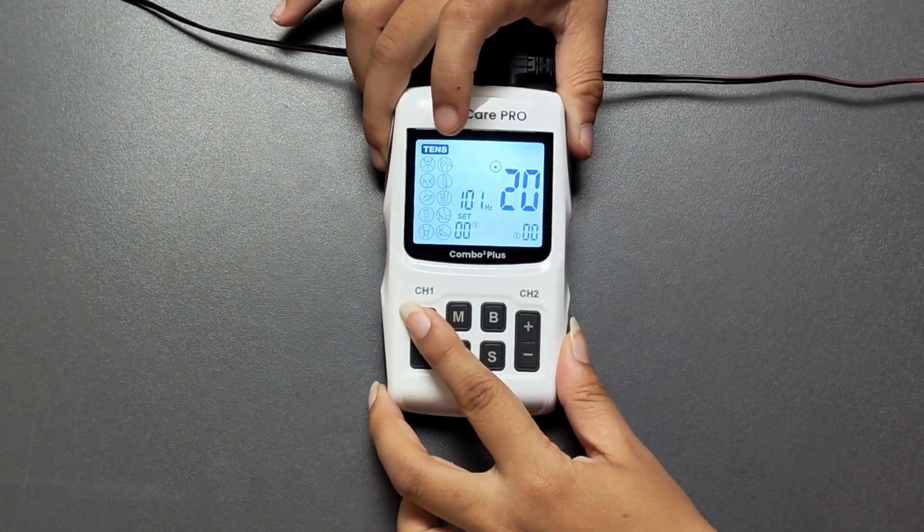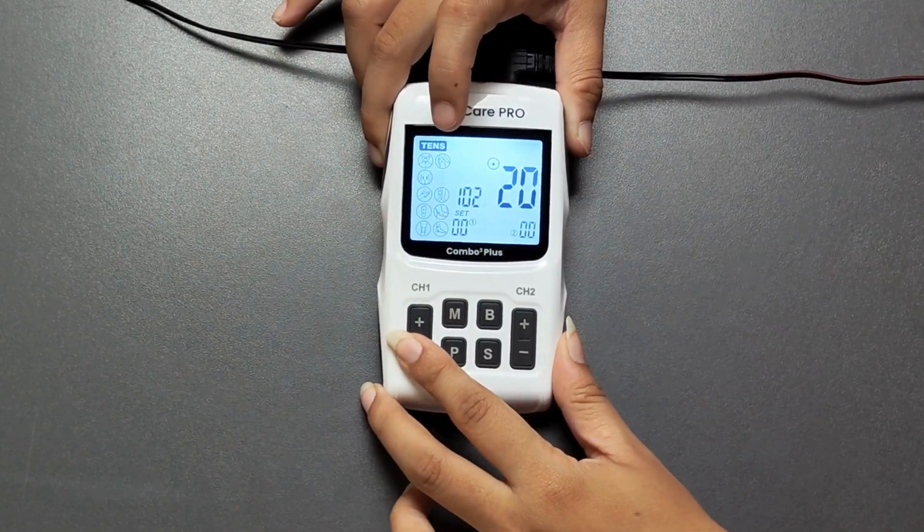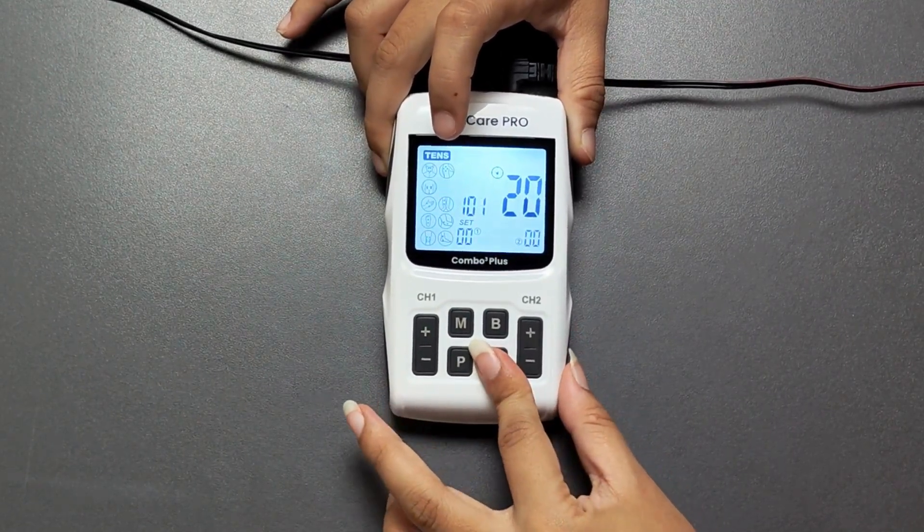Use the plus or minus buttons to adjust each parameter as needed. After adjusting, press S to exit the settings menu.